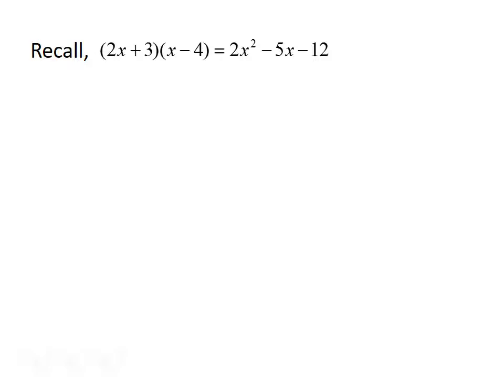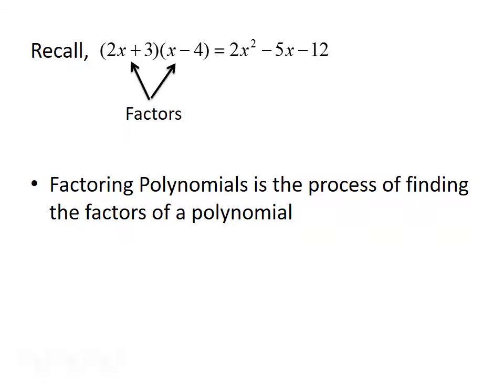For example, if we have 2x plus 3 times x minus 4, we can FOIL that out to get 2x squared minus 5x minus 12. The two terms that are multiplied together are called the factors of the polynomial. So 2x plus 3 and x minus 4 would be factors of the polynomial 2x squared minus 5x minus 12. To factor a polynomial is basically just the process of finding the factors of a polynomial.